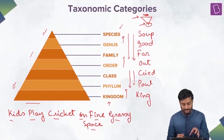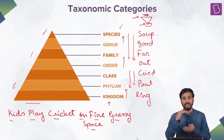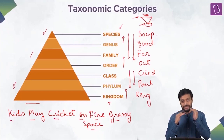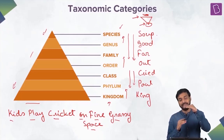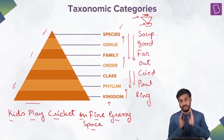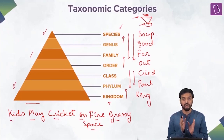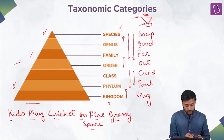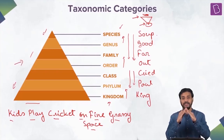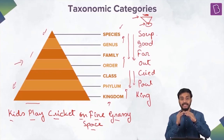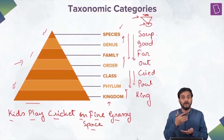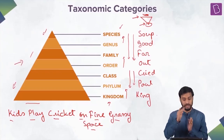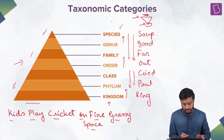So you understood the taxonomic triangle, also called taxonomic hierarchy. Just remember: kingdom is at the highest hierarchy and species at the lowest. Representation can be two ways — one as an upright triangle, and another as an inverted triangle when talking about hierarchy form.